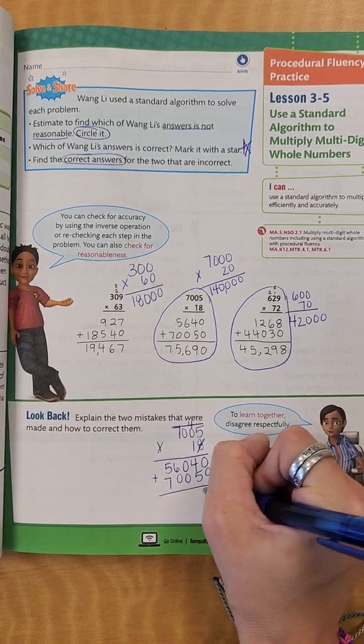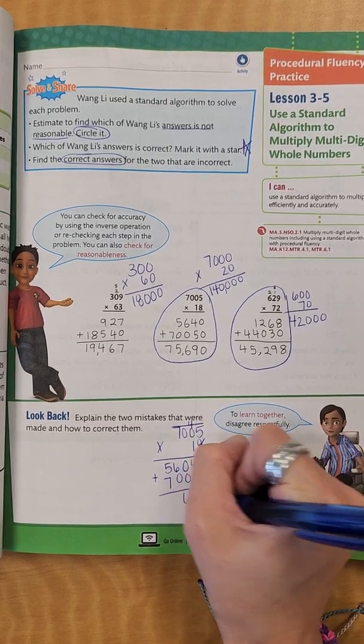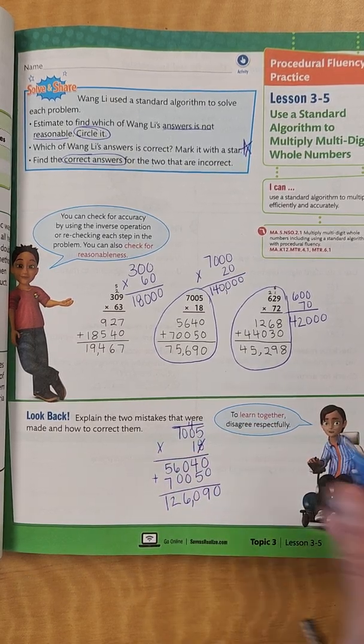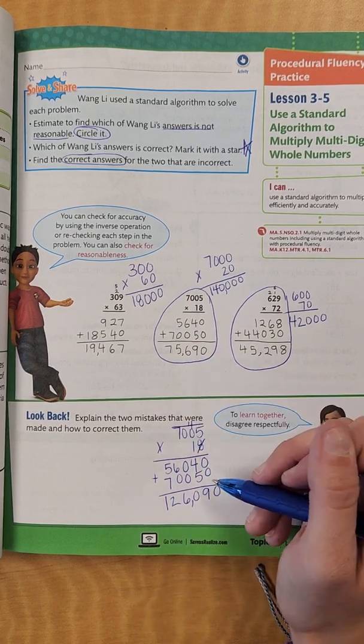Add it up. I have 0, 9, 0, 6, 12. So 126,090, so definitely wasn't the right one.